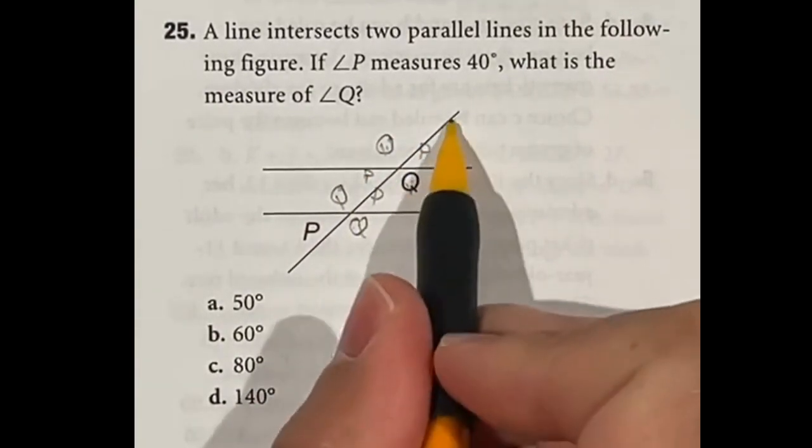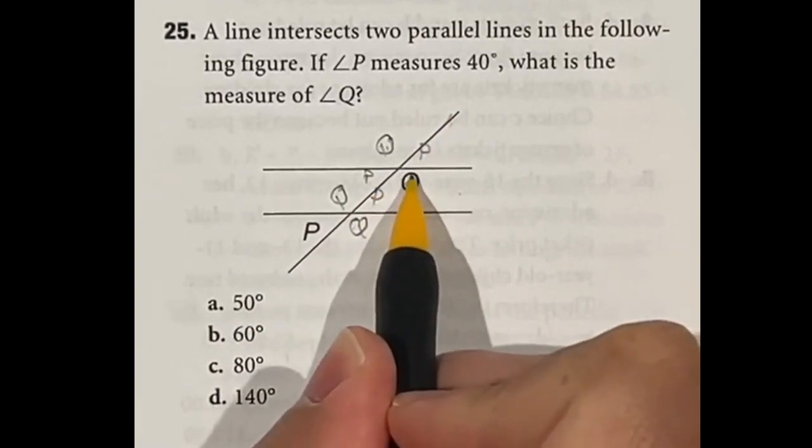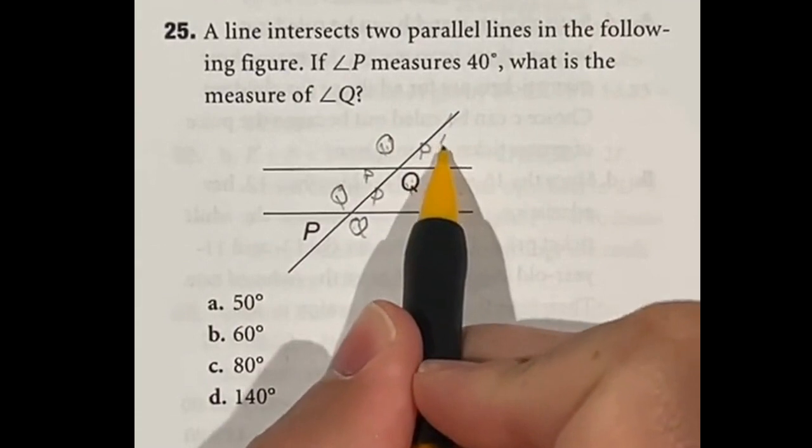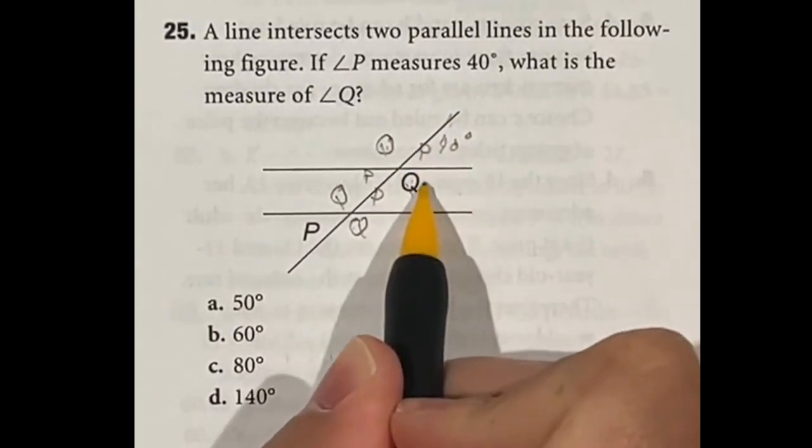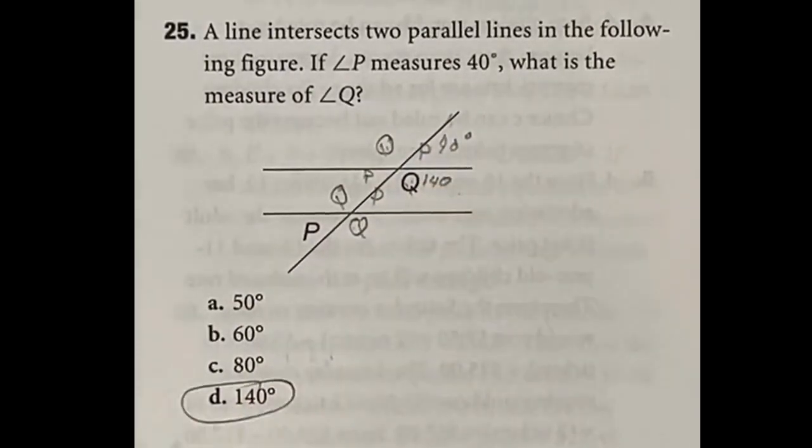So when we're looking at this a straight line is 180 degrees. So if P here is measuring at 40 degrees then 180 minus that 40 is going to leave me with 140 degrees for Q which is answer D.